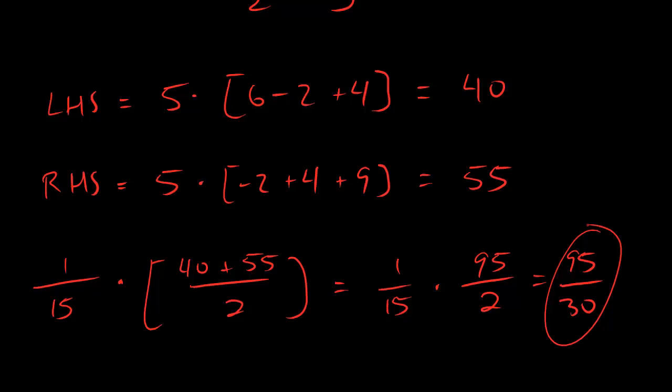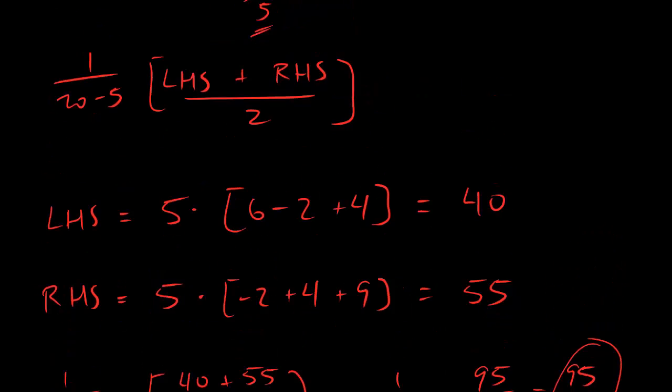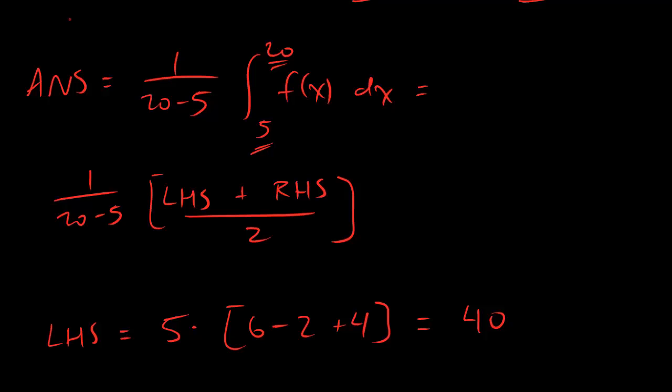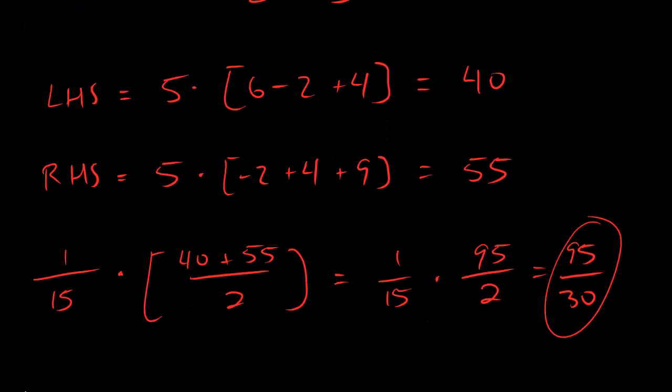This problem was easy so long as you remembered that the formula we were working with was this formula for average value. And that if we're trying to approximate that integral because we don't have a formula, you just got to do left-hand sum, right-hand sum divided by 2. No biggie. All right. Let's move on.